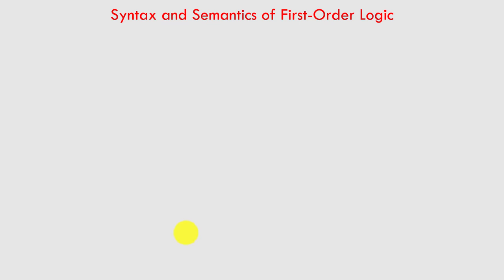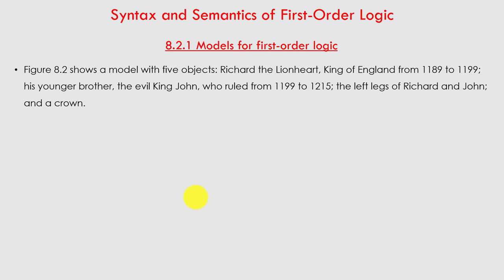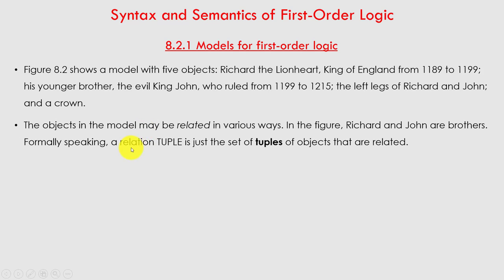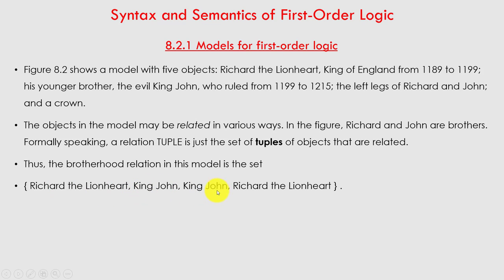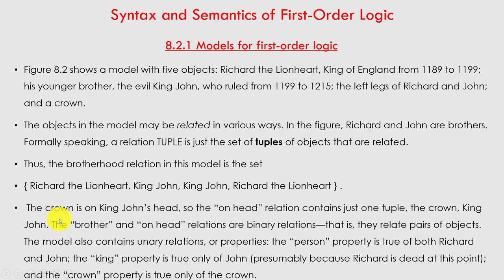Next is the syntax and semantics of first-order logic. The model for first-order logic has five objects: Richard the Lionheart, King of England from 1189 to 1199; his younger brother, the evil King John, who ruled from 1199 to 1215; the left legs of Richard and John; and the crown. Objects in the model may be related in various ways — for example, Richard and John are brothers, formally speaking they have a brotherhood relation, which is simply a set of tuples of objects.